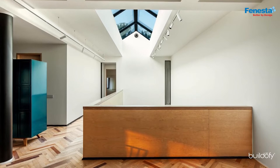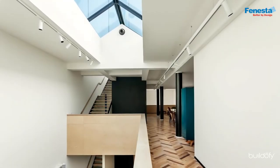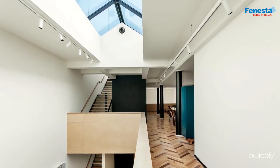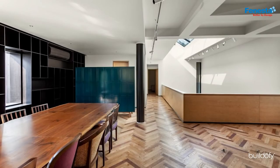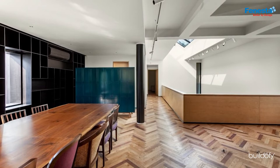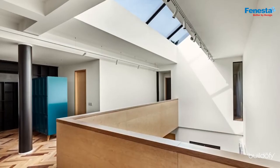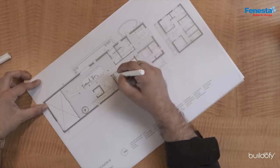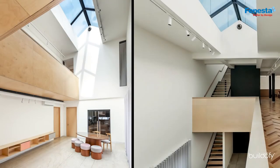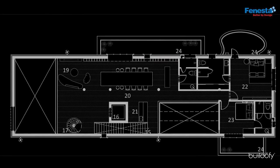Upstairs, you have a double height space where the ceiling continues all the way through, so you can experience and see the full expanse of the house from the double height space. The formal dining is right here, which connects with and relates to the formal living space downstairs, while you can still see the family space from the formal dining area.